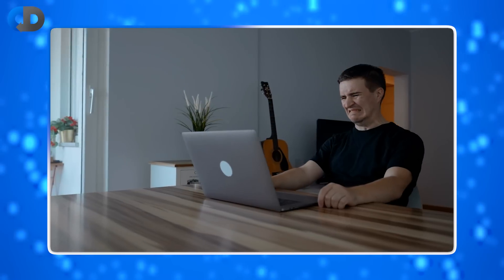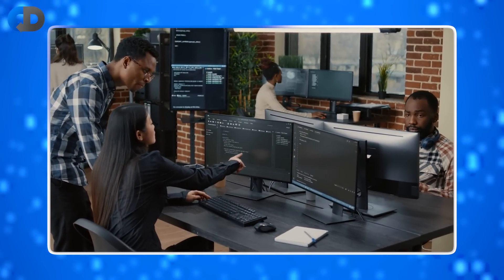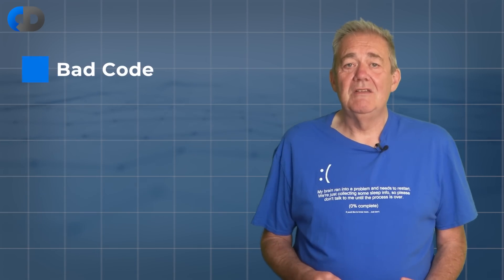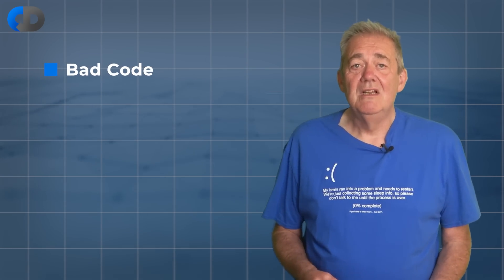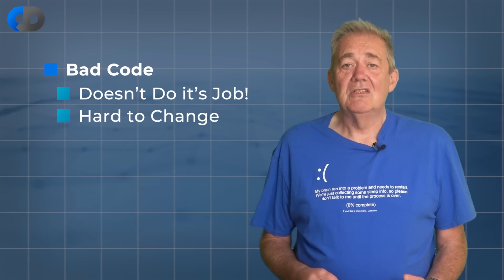Bad code is code that is difficult, or at least unpleasant, to work on. Fundamentally, bad code is defined by two things: either it doesn't do what it should, or even if it does, it's too hard to change when we need to change it. Everything else is secondary to those two things. If it does what it's meant to and it's easy to change, then it's good code.